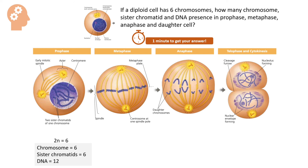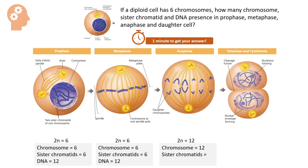In metaphase, the number of chromosomes is 6, the number of sister chromatids is 6, and the number of DNA molecules is 12. In anaphase, the number of chromosomes is 12, the number of sister chromatids is 0, and the number of DNA molecules is 12.